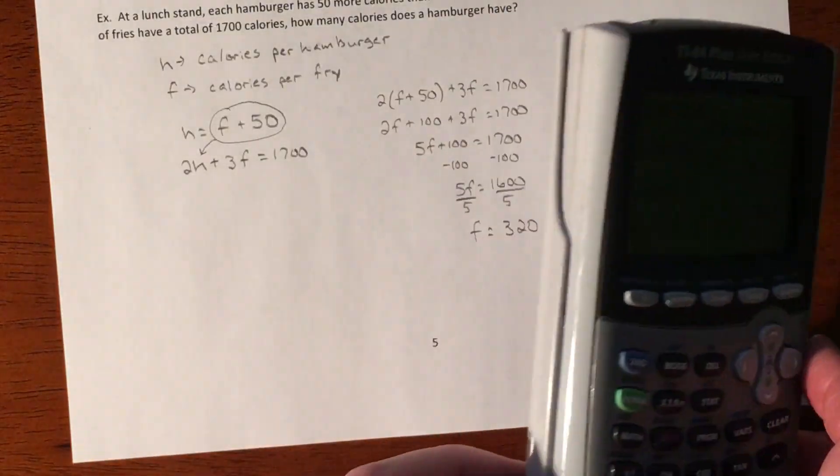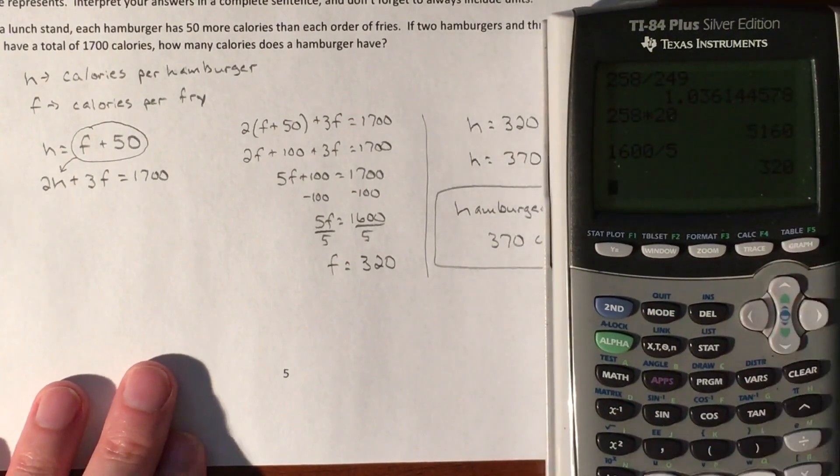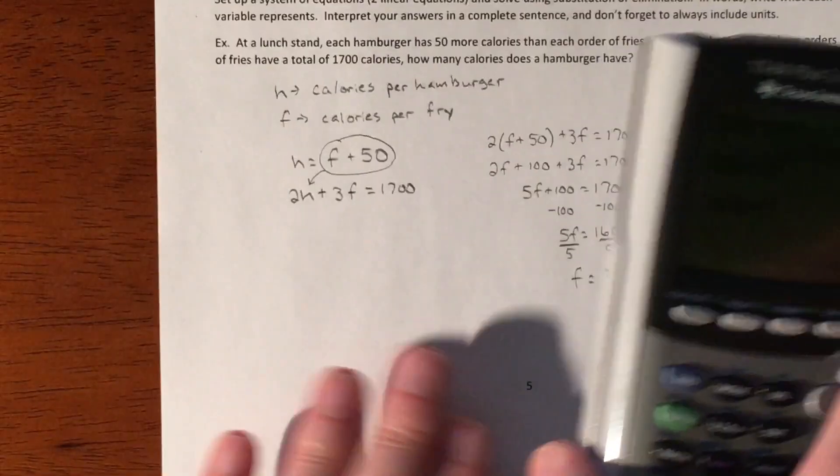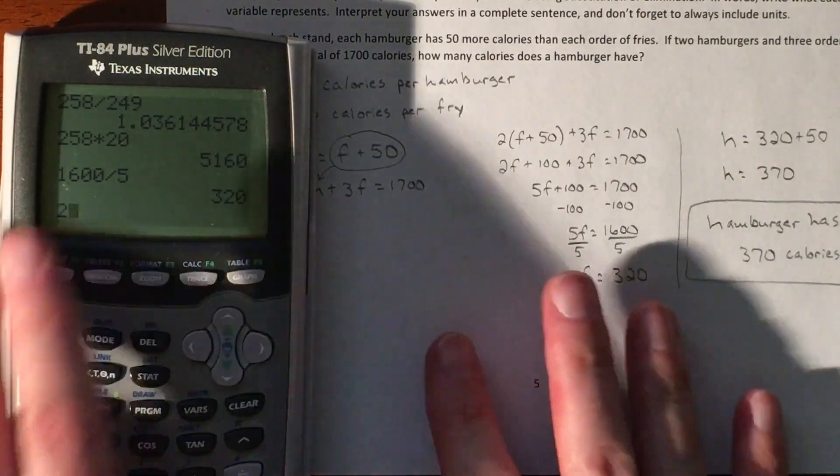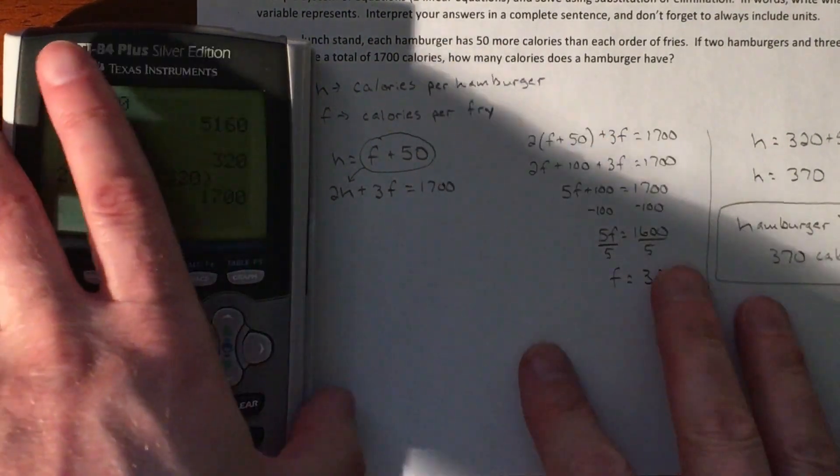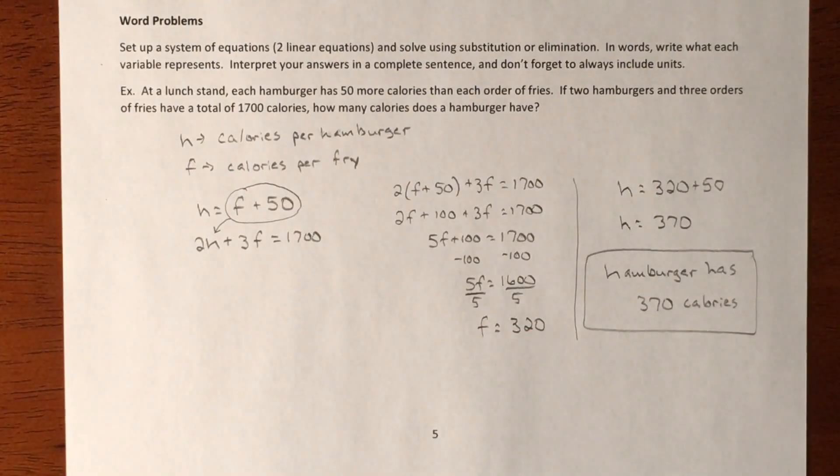So according to this, my 320 and my 370 make 1,700 calories, so let me do the math on that. So we have two hamburgers at 370 plus three french fries at 320. Does it in fact make the 1,700? Yes, perfect. So I know we definitely are good. All right, so that was the first example involving systems of equations.